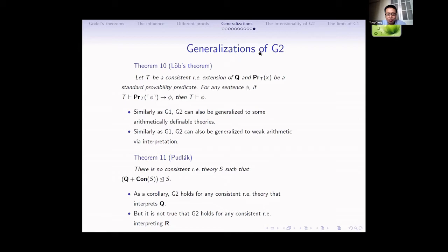Now I give a big overview of the generalization of G2. This is the famous Löb theorem, which can be viewed as a generalization of both G1 and G2. Suppose Prov_T is a standard provability predicate. If this is proven in T and phi is proven in T, and we assume T is sound in the standard model, then we can see that for any phi not proven in T, this statement is true but not proven in T. So we can give many instances of G1. Also, if we take phi to be zero ≠ zero, since T cannot prove zero ≠ zero, we can show that T cannot prove the consistency of T — a generalization of G2.